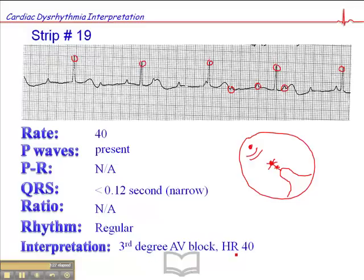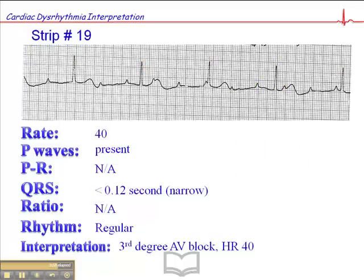The heart rate in this third-degree AV block is slightly on the high side because the range is typically 20 to 40. But that higher heart rate is fairly consistent with a focus that's up higher. And sometimes when you do see narrow QRS complex third-degree AV blocks, the heart rate may even be higher — at 60 or so — because the focus is coming from so high, around the bundle of His or the perinodal tissue, but somewhere below the AV node. So this is an interesting case of a third-degree AV block with a narrow QRS complex.